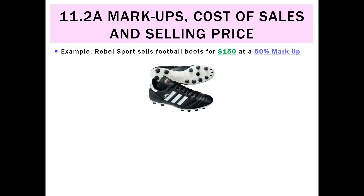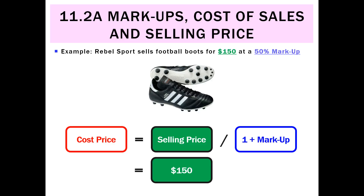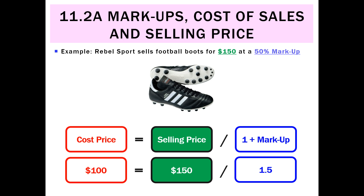That formula works no matter what the number is. In this case we use a 50% markup on football boots sold for $150. To calculate the cost price, we use: selling price divided by (1 plus the markup). So we take $150 divided by (1 plus 0.5), which is $150 divided by 1.5. These footy boots originally cost us $100.